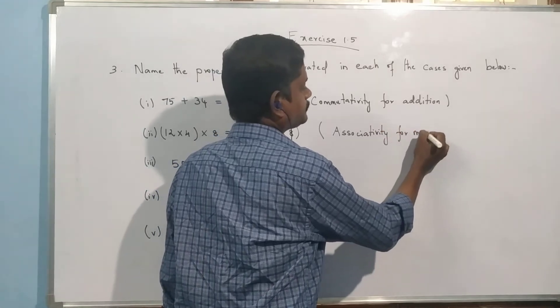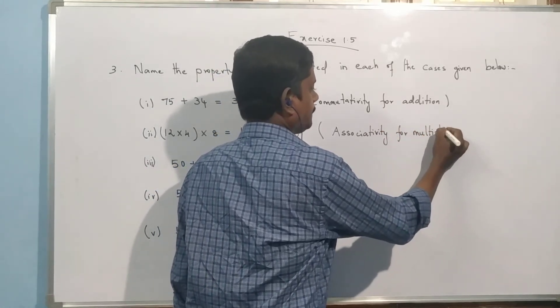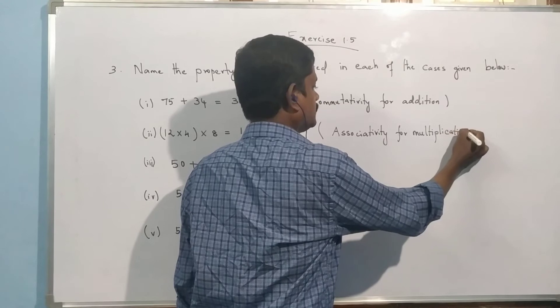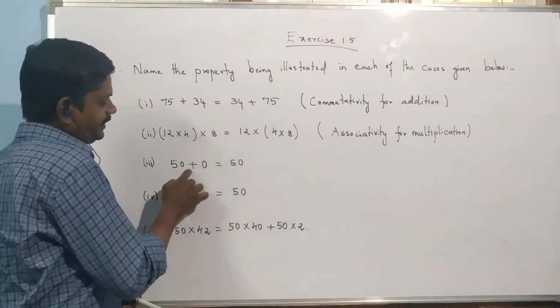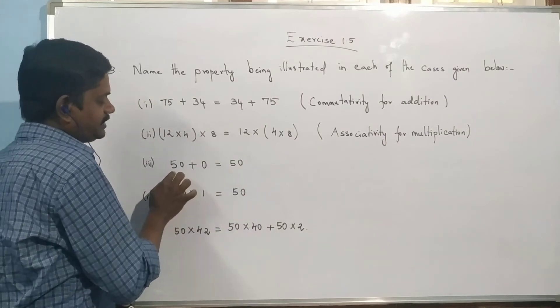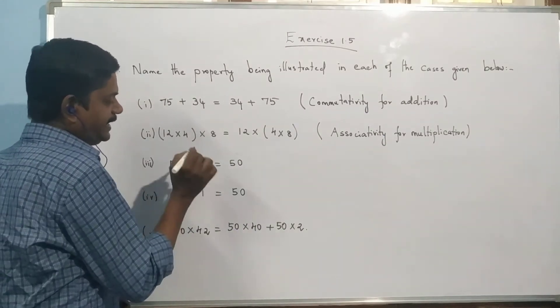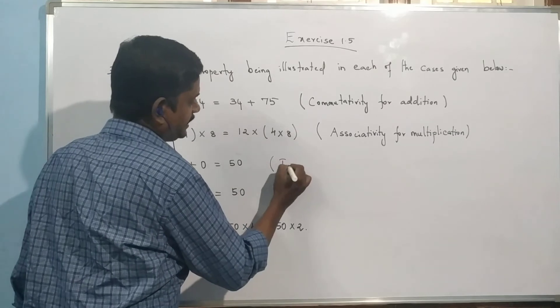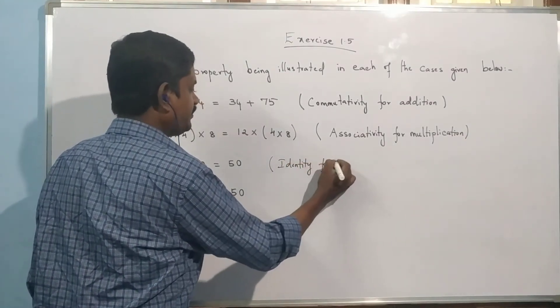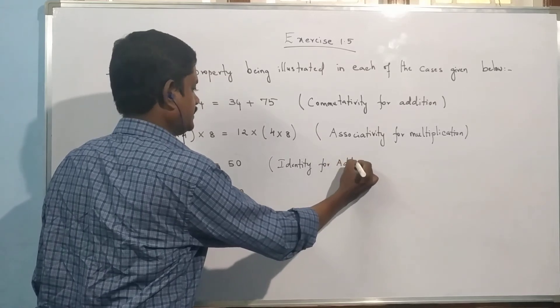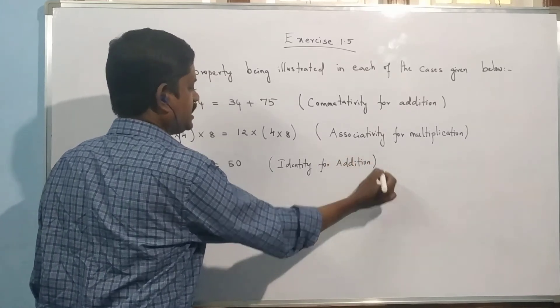Associativity for multiplication. Now what property is this? 50 plus 0 is equal to 50. When we add 0 to a number, this is identity. Identity is 0. What is this identity? Identity for addition. Addition has 0 as identity.